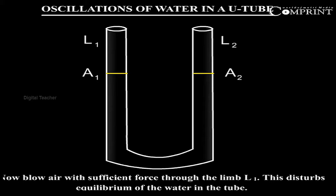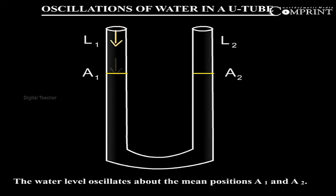Now blow air with sufficient force through the limb L1. This disturbs the equilibrium of the water in the tube. The water level oscillates about the mean positions A1 and A2.